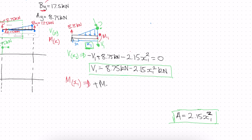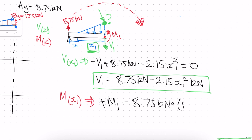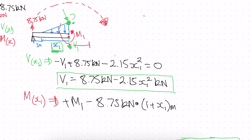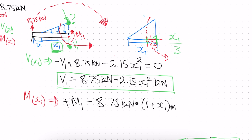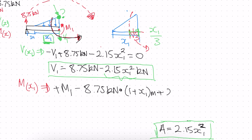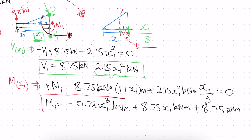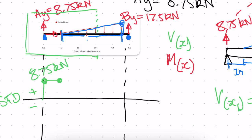Now we write the moment as a function of x1. Summing moments about the cut point: positive M1, minus 8.75 kilonewtons times the distance (1 + x1) meters, plus the moment from the triangular force. The centroid of the triangular force acts at one-third of x1 from the larger end, so its moment arm from the cut is x1/3. The triangular force of 2.15·x1² acts in the positive direction, so we add positive 2.15·x1² × (x1/3). Setting the sum equal to zero and solving gives us M1.